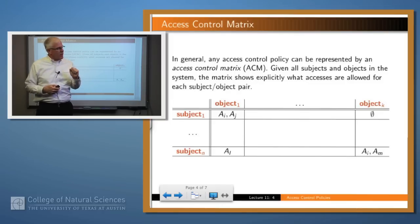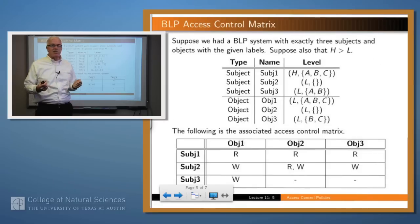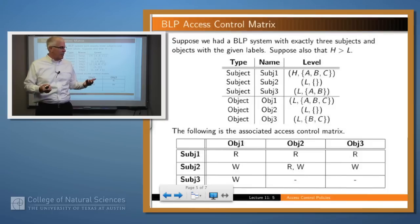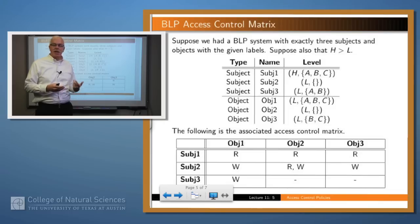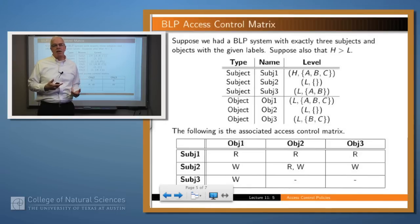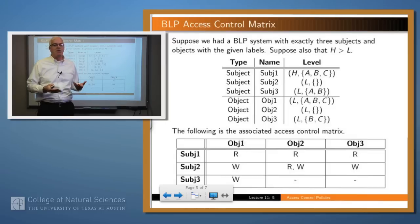In a Bell-LaPadula system, an access control policy can be represented as an access control matrix. Suppose you had three subjects and three objects with the associated levels — you can fill in this table, labeling the matrix with those subjects and objects. Then you fill in either read or write in the intersections depending upon the level of the subject and the level of the object, by consulting the simple security and the star property. For example, subject one has read access to object one because the level of subject one dominates the level of object one.